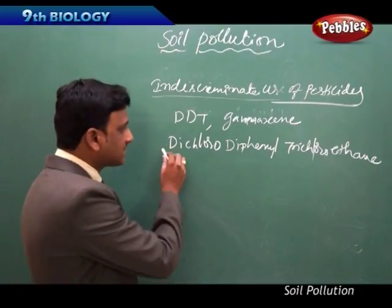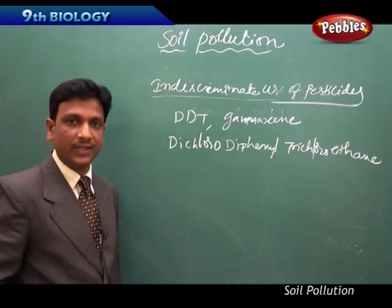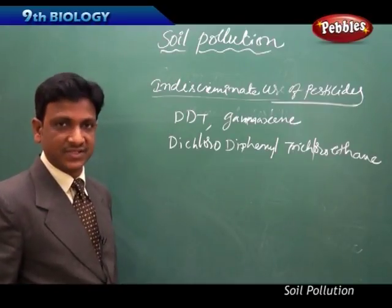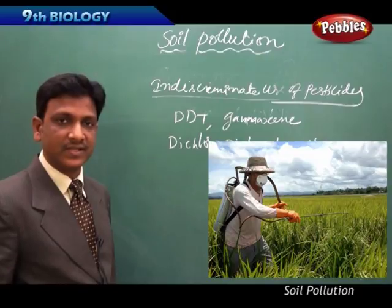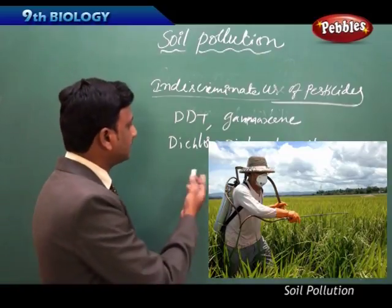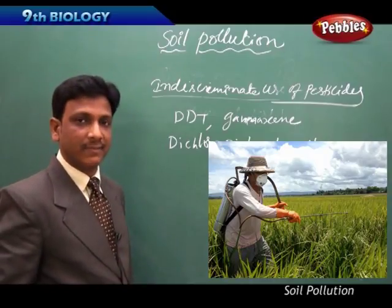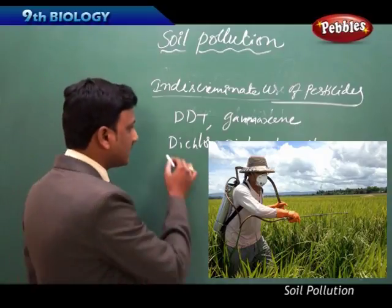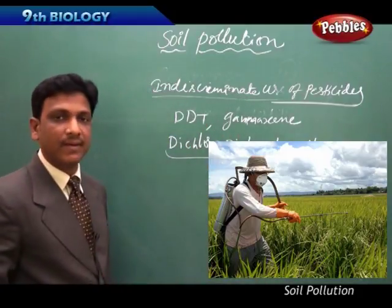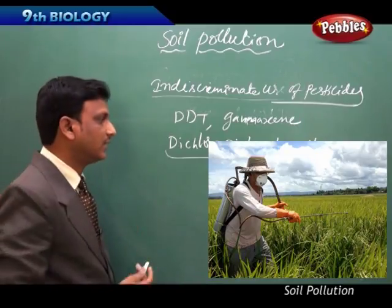These pesticides are used to control pests because crops are attacked by various pests - different insects, rodents, and different kinds of animals. The pests are controlled by dichlorodiphenyltrichloroethane and Gamaxin, but what happens is that the insects become immune - they are resistant to these chemicals.